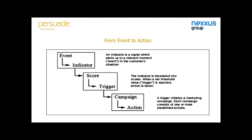The mechanics work as follows: when an event takes place, we need an indicator in our data — it could be a visit to a specific web page, or data received through external or internal channels. When we find this indicator, we match it with a score or scorecard, which might determine if somebody should get a specific offer or require the indicator to occur several times. When that score is met, the trigger fires and the customer is included in a specific campaign consisting of one or more actions.